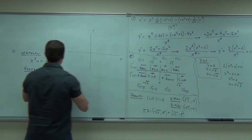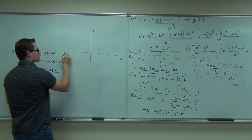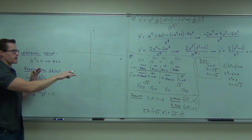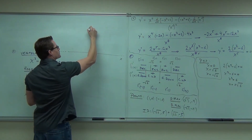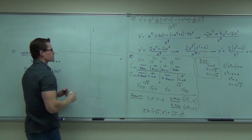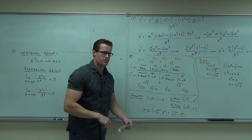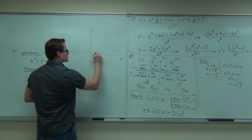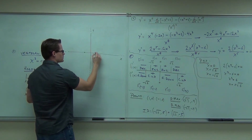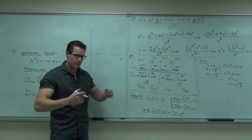My asymptotes are at y equals 0 — horizontally, both right and left — and x equals 0 for our vertical. So we know we have some asymptotes. Next thing you do: put down your points. Your x-intercepts are at (1, 0) and (-1, 0). Your y-intercept — you don't have one because you have an asymptote there.